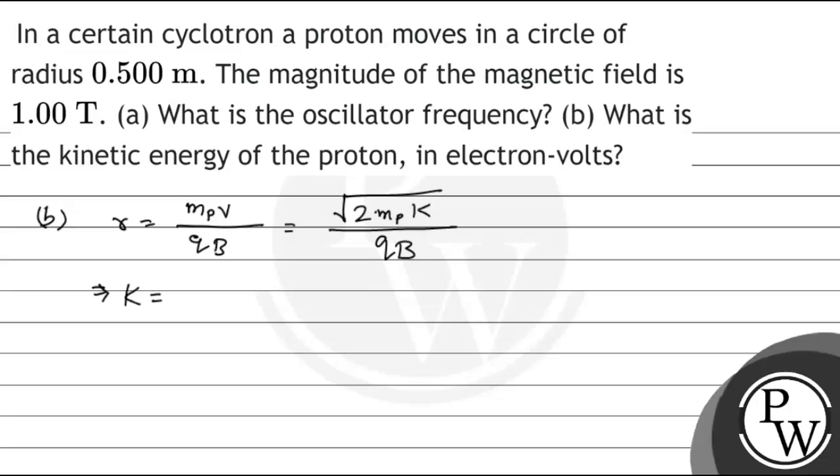So K = (RqB)²/(2m). Substituting values: R = 0.500 m, q = 1.6×10^-19 C, B = 1.00 T, all squared...